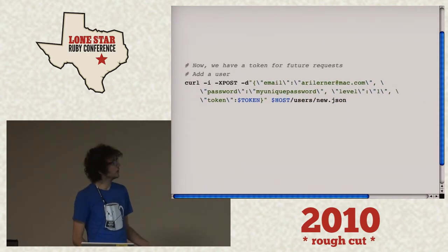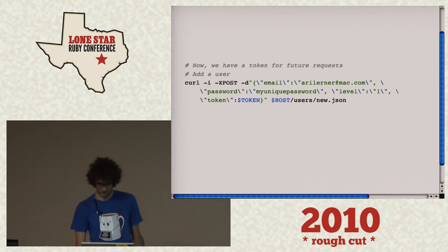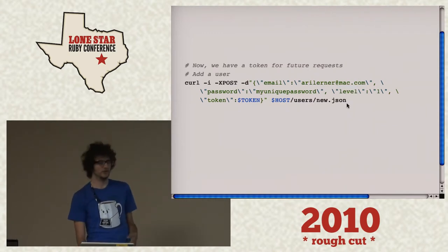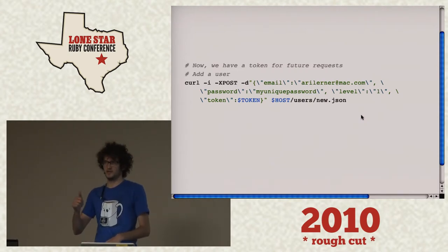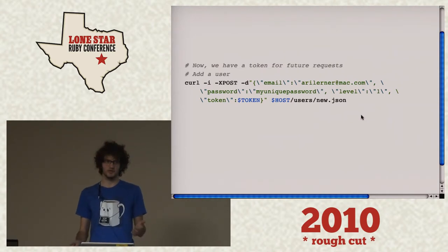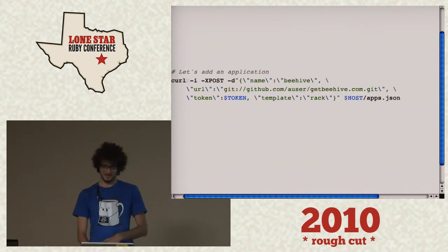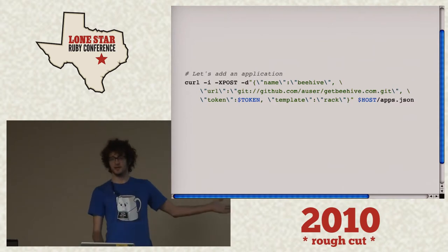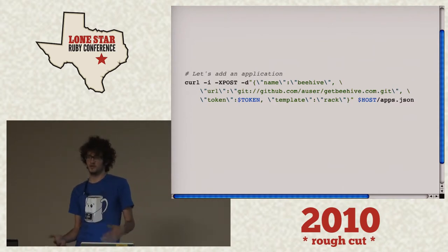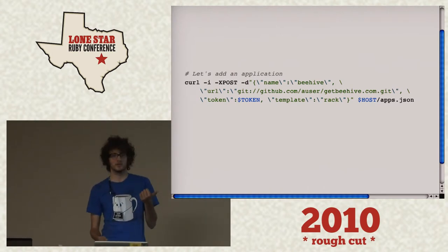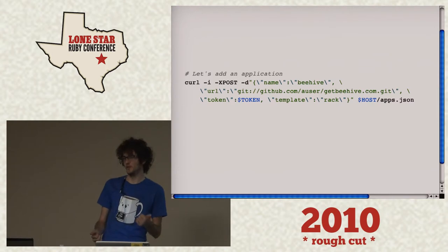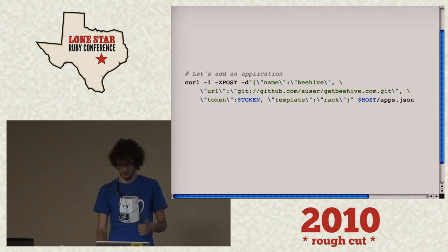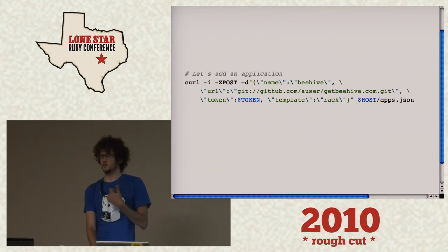So let's say we want to add a user. There are levels — level one is administrator and it goes down from there. If you don't specify that level, it's a two, so it's a regular user and you can't do crazy things with other people's applications. So this is how you'd add an application — I know it looks really gross to us Ruby users. The Beehive create works in the Ruby gem, so if you did want to use the Ruby gem, you wouldn't have to do this crazy curl call.